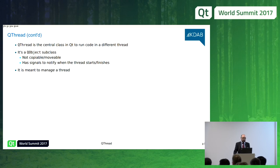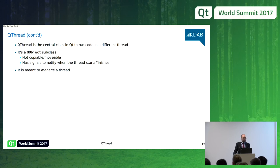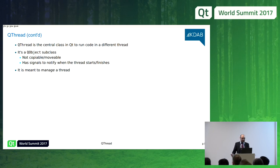QThread is the class you use to create a new thread, spawn it, and launch it. QThread itself, from a code point of view, is a QObject subclass, so you cannot copy it or move it. But since it's also a QObject, it has signals that tell you when a thread starts or finishes. The important part is that QThread is meant to manage a thread — it represents a thread of execution, but is not itself the thread it manages.